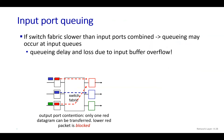Now let's discuss queuing in more detail — why queuing happens, how it can be handled, what the buffer size should be, and what scheduling techniques can be used. For input port queuing: if the switching fabric is slower than the combined rate of the input ports, packets get queued at the input port, as you can see in the figure where queues are being created.